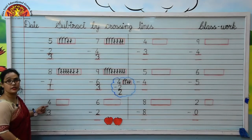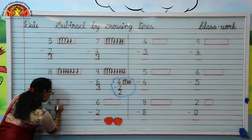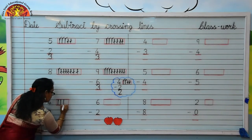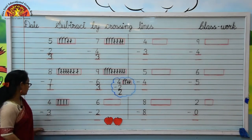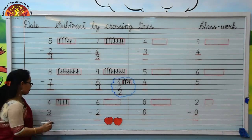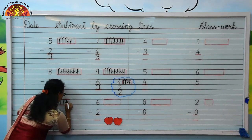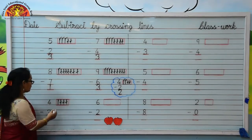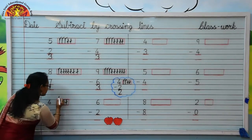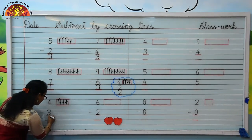Which number is written here? 4. Kids, draw 4 lines: 1, 2, 3, 4. The downside is 3. Kids, we will cross 3 lines from 4 lines. Let's cross them: 1, 2, 3. Kids, how many lines are left? Let's count: 1. Your answer is 1. So kids, write here 1.